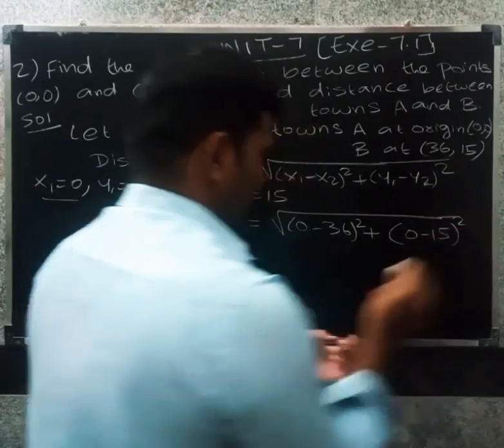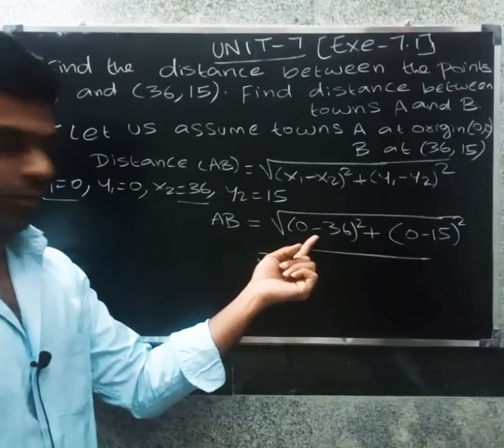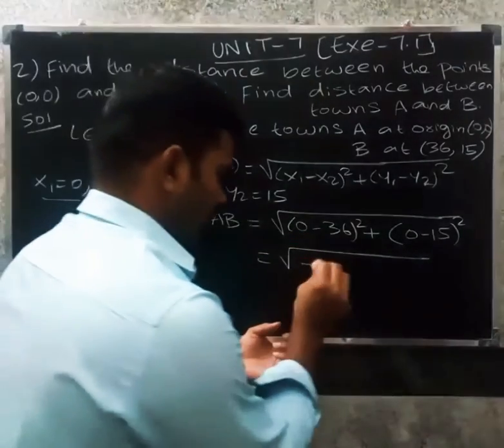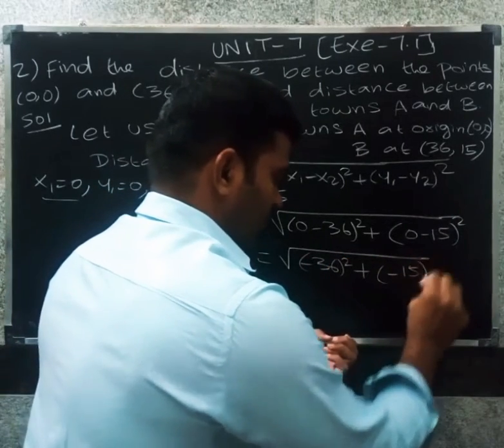0 minus 15 the whole square. So we will get 0 minus 36, another minus 36. So minus 36 square plus 0 minus 15, minus 15 the whole square.